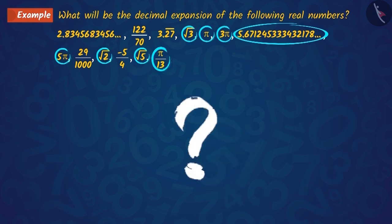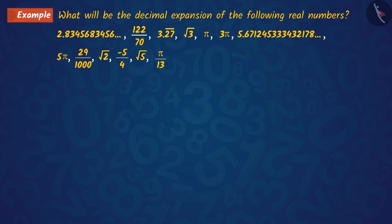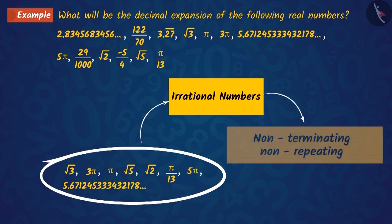Can you guess what their decimal expansions would be like? We know that the decimal expansion of all irrational numbers is non-terminating, non-repeating.